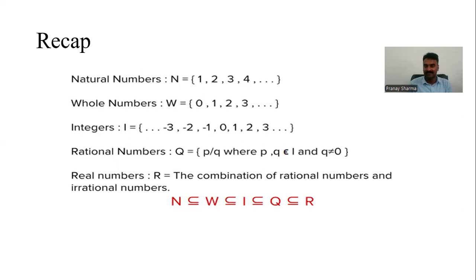So it is actually placed in curly brackets. We have three types of brackets: parenthesis, square brackets, and curly brackets. All of them have got their own importance, and we'll be reconsidering this when we actually discuss about parenthesis, square brackets, and curly brackets, and what is the priority order that we should be giving to them.